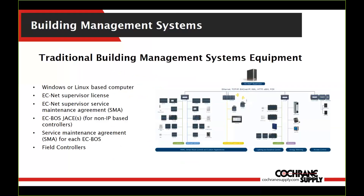This is a typical architecture we see in a lot of buildings for a traditional BMS. On top, you have some sort of PC, Windows or Linux — it could be a physical PC, rack-mounted server, a virtual machine, or even a solid-state industrial PC. You'll need a license for supervisory software for EC-NET, a maintenance agreement for that, and typically an ECBOSS in the system used for field bus integration, whether it's LAN, BACnet MSTP, or Modbus RTU, along with a service maintenance agreement for that BOSS and the field controllers required for control of all the equipment, both plant and terminal.